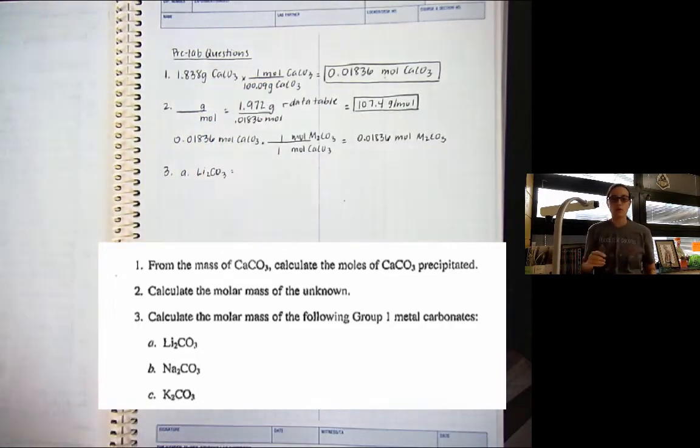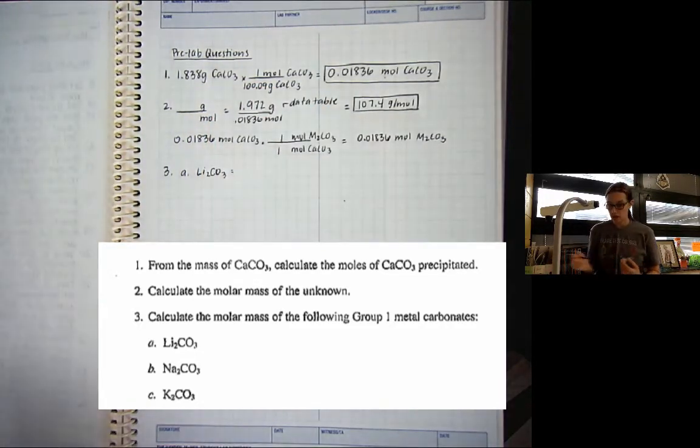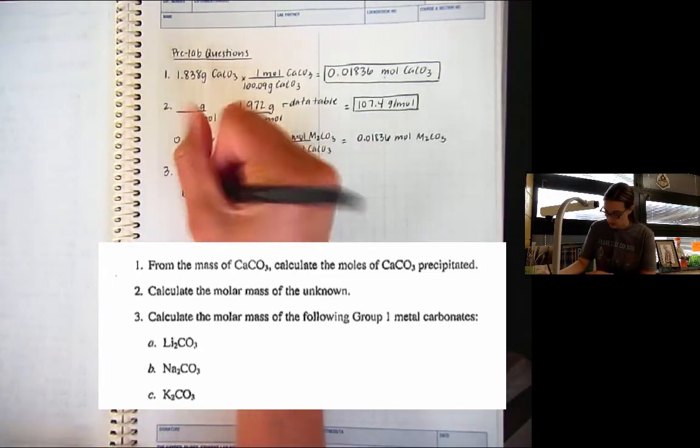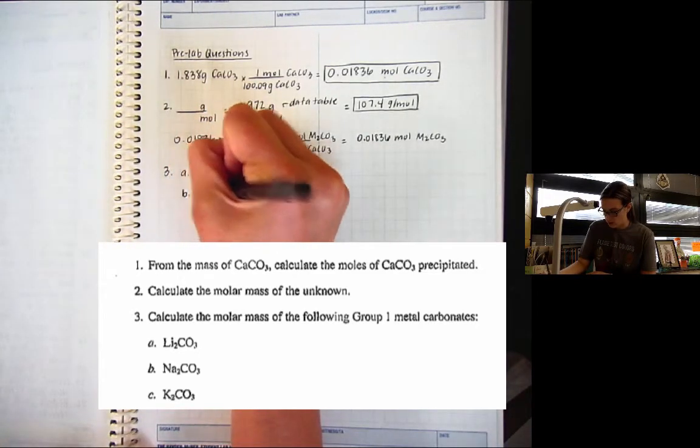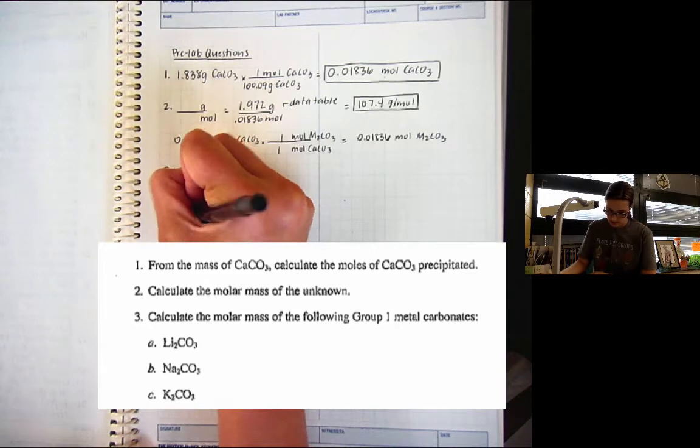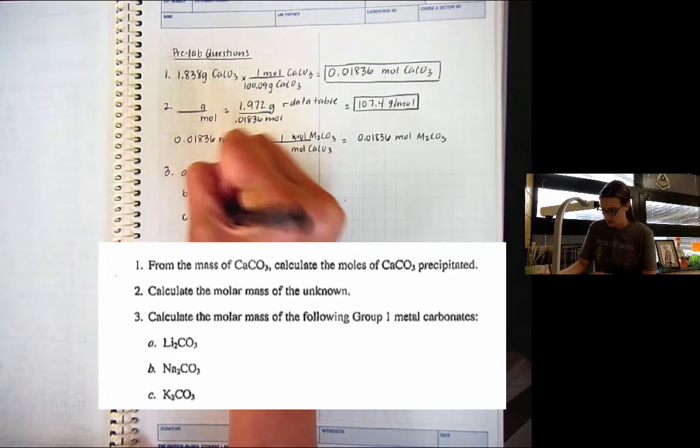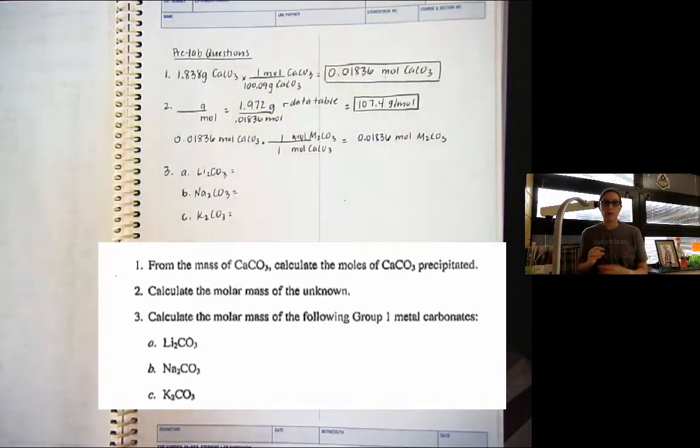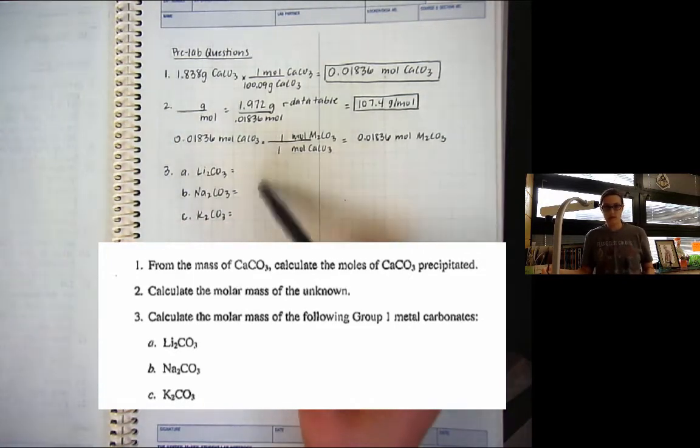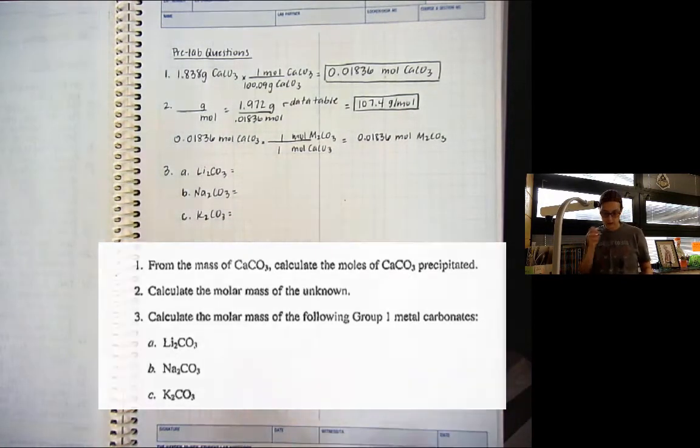Now, if you just show your work for 1, you don't need to show your work for the other 2. B, you're going to be finding it for Na2CO3. And C, you're going to find it for K2CO3. So I want you to take a second. If you haven't done this yet, pause. Go ahead and go through and find the molar masses.